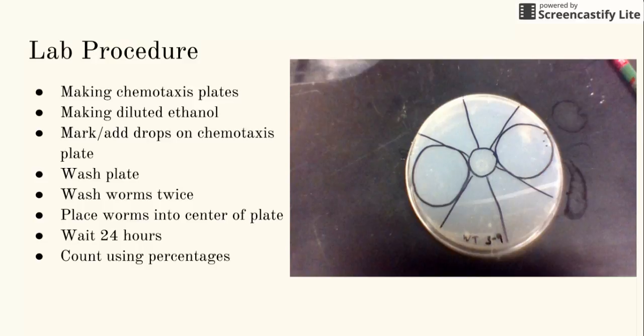Before even washing the worms, we added the drops of ethanol and water to their appropriate sides. To clean the worms, we took a syringe with 0.5 milliliters of water and angled the plate. Pouring the water all over the plate, we took another 0.5 milliliters of water and did the same thing. Picked up the worms with the pipette and transferred them to a microtest tube, placed them in our centrifuge.